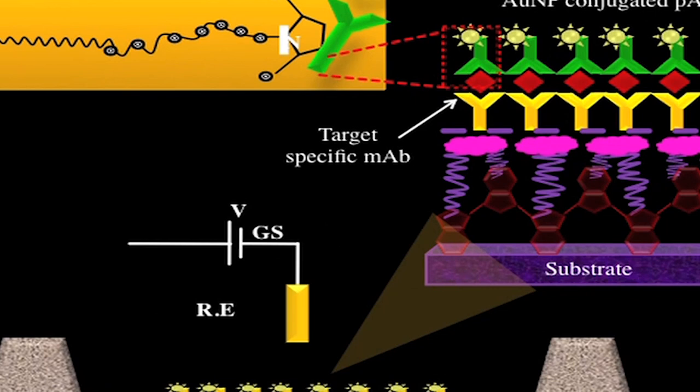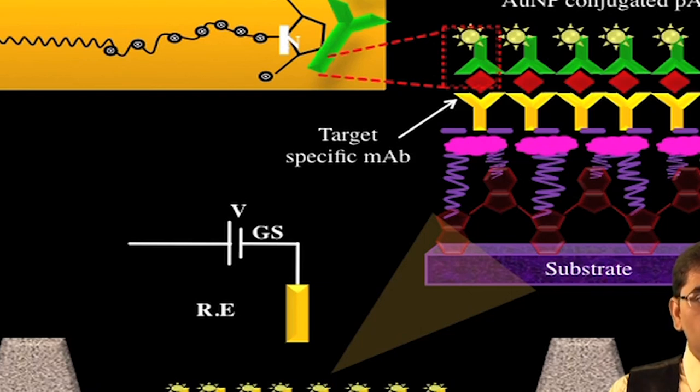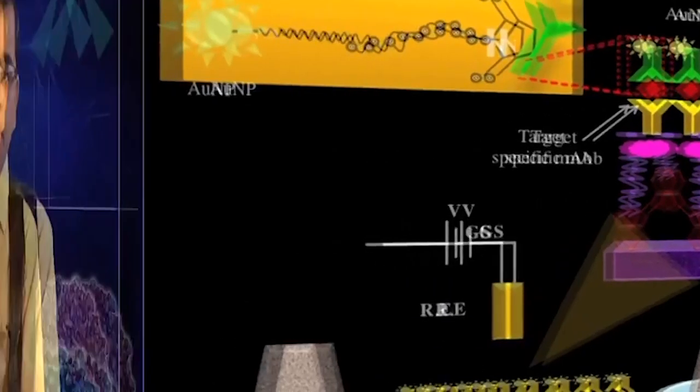Gold nanoparticles exhibit unique optical, electronic and catalytic properties and signal enhancement capabilities, making them suitable for selective and ultra-sensitive detection of various biomarkers. The utilization of gold nanoparticles in electronic biosensing leads to signal amplification. Monoclonal antibodies are immobilized on the gold nanoparticle surface, enabling specific detection of target proteins. Gold nanoparticles can also be functionalized with biomolecules to target cancer cells for early-stage cancer detection and thermal therapy of tumors.